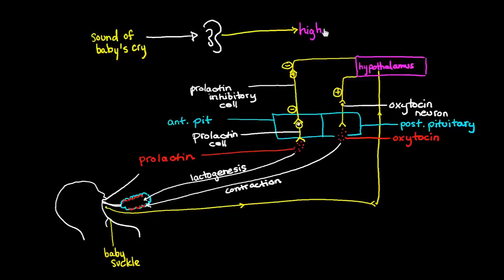Those are auditory centers and other higher parts of the brain, and those higher centers will send a message to the hypothalamus saying, initiate this cascade of events and cause milk to be ejected, even if a baby isn't suckling. And this is kind of a backup mechanism because it means that potentially any lactating mother in the vicinity could nourish any hungry child.